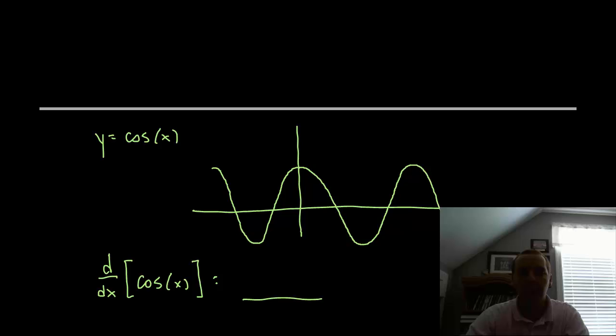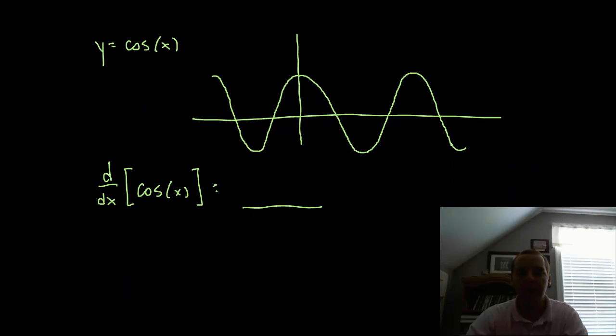Alright, in a similar way, we can take the derivative of cosine x. I'll do this one a little quicker. So at 0, we have a slope of 0. At pi over 2, we have a slope of negative 1. At pi, we have a slope of 0 again. At 3 pi over 2, we have a slope of positive 1, etc.